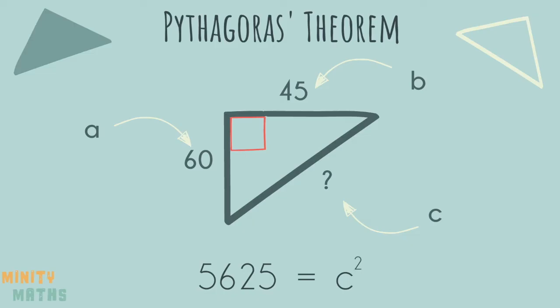To find out what c is we need to find out the square root of 5625. Again using your calculator or pen and paper to do this. So now we have found out that c is equal to 75.